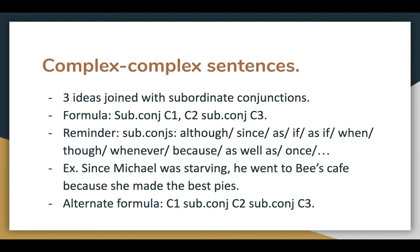Three ideas are joined using subordinate conjunctions. The first formula starts with a subordinate conjunction, then C1, a comma, C2, a second subordinate conjunction, and then C3, followed by a period. Here's a quick reminder of some of the most common subordinate conjunctions: although, since, as, if, as if, when, though, whenever, because, and once. There are many more. If you need to review them, I'd recommend printing off the PDF of the 50 most common ones uploaded to our website and pasting it into your notebook.